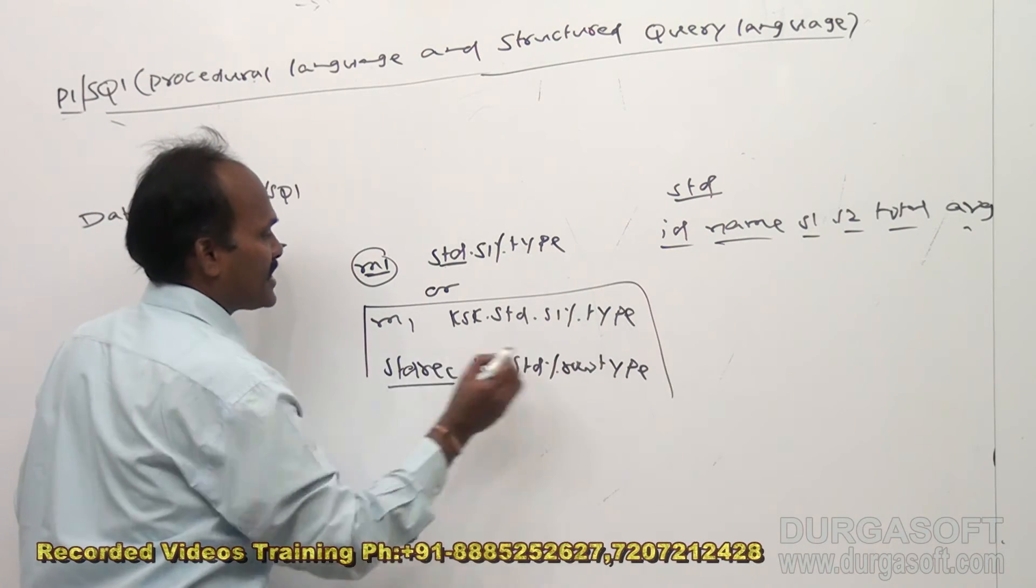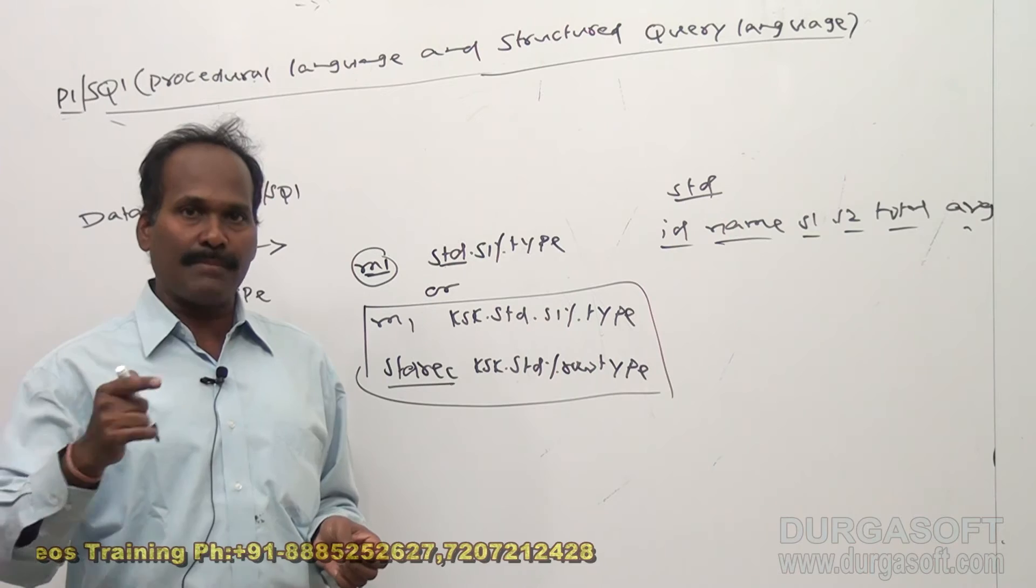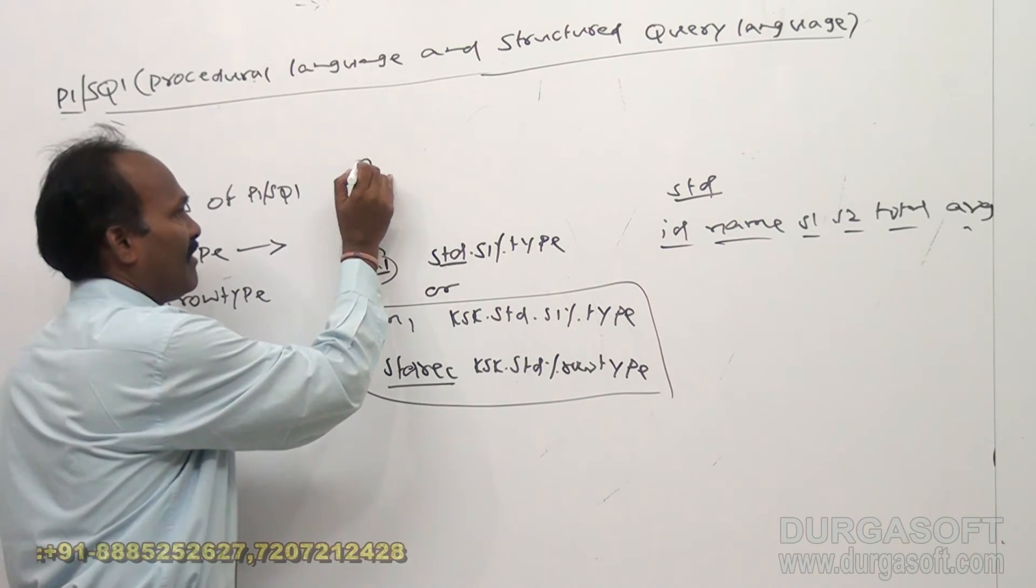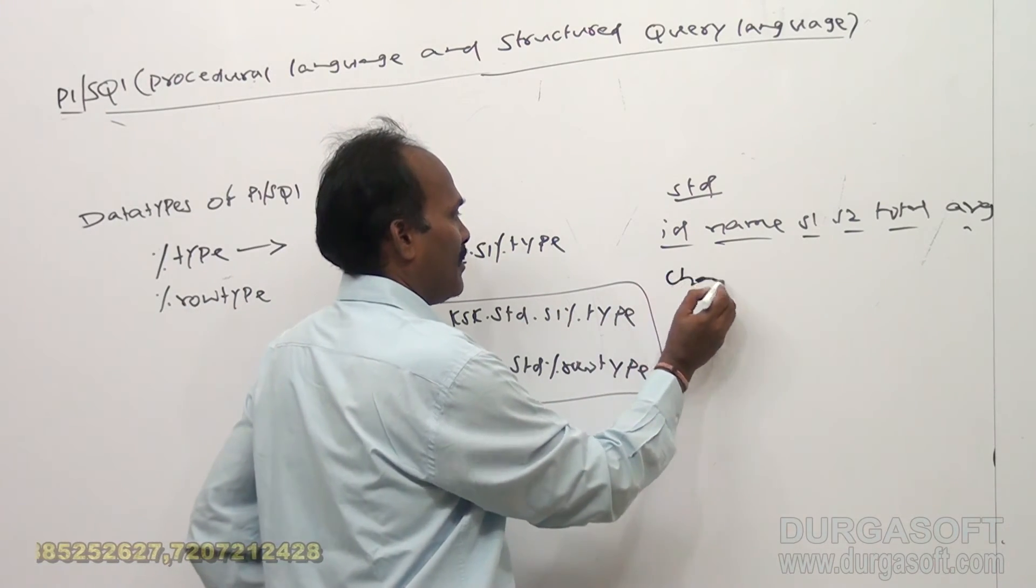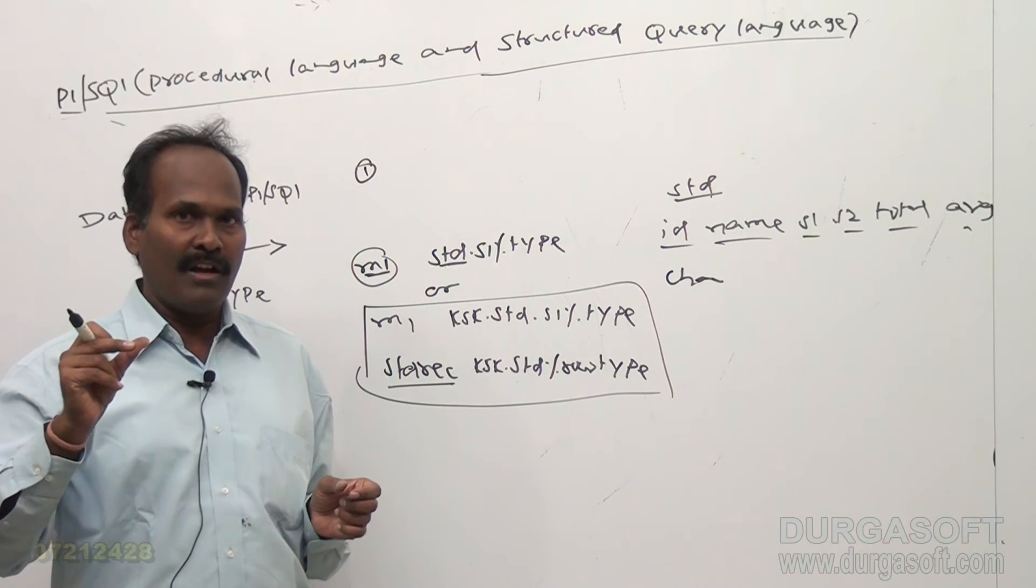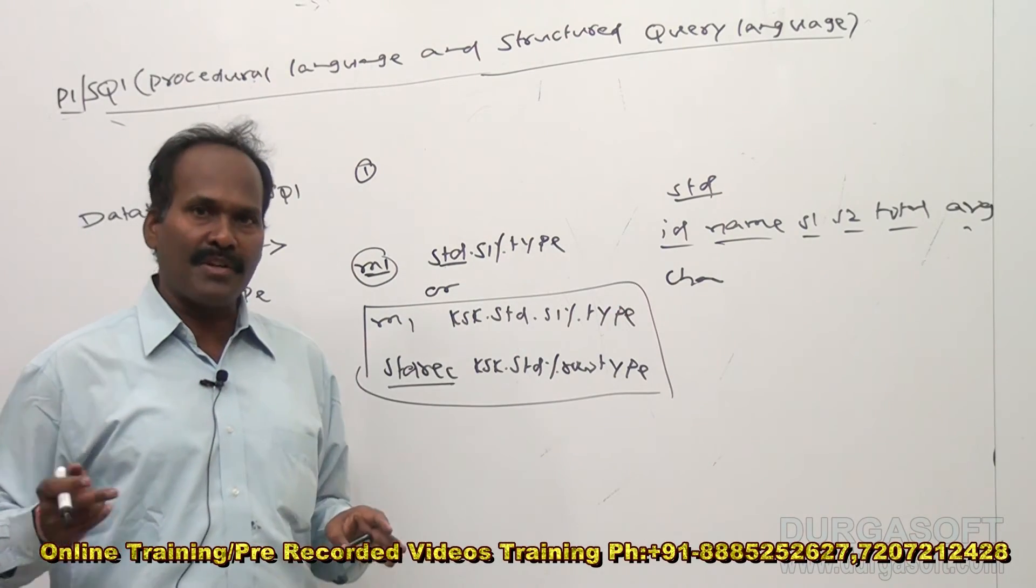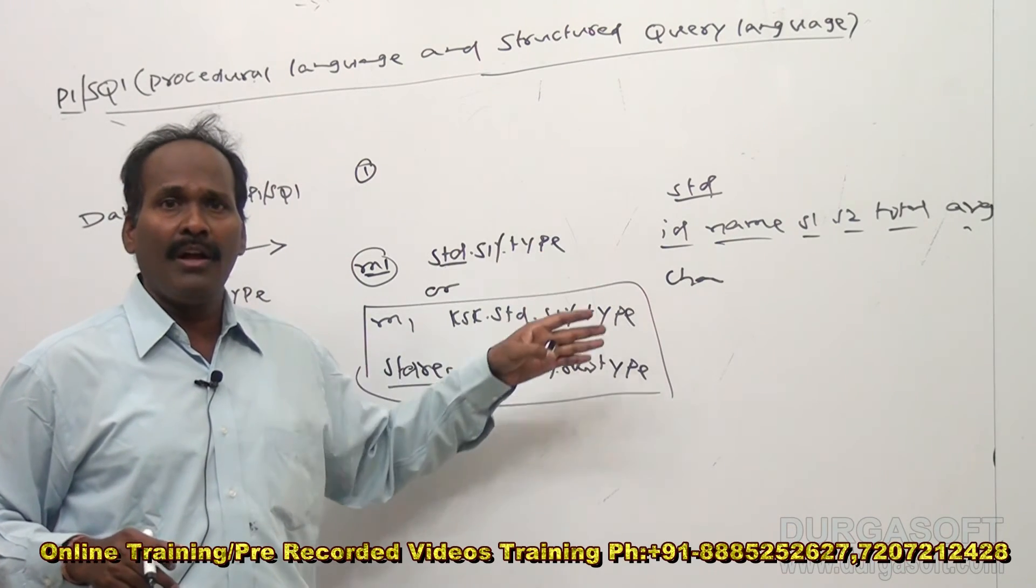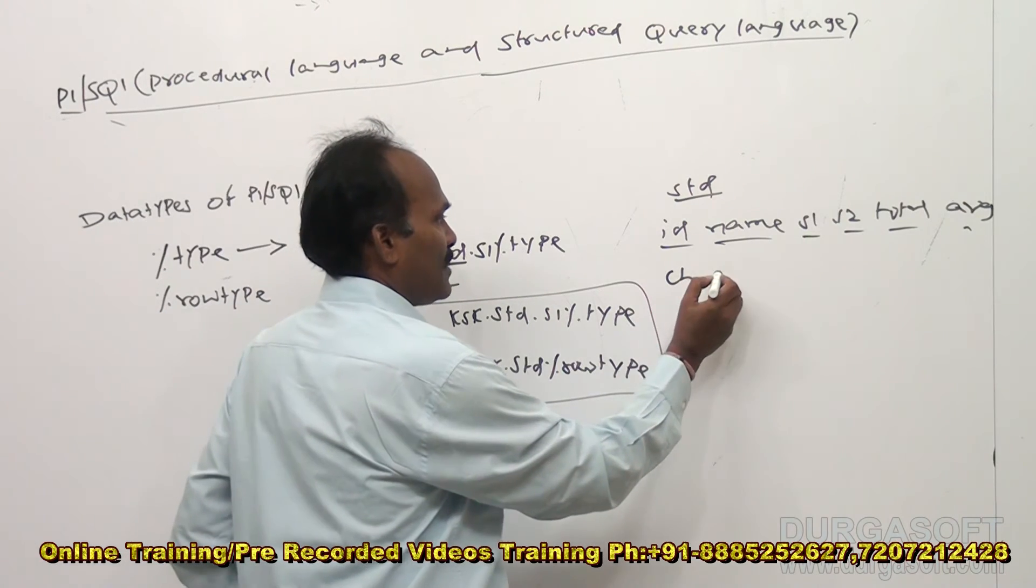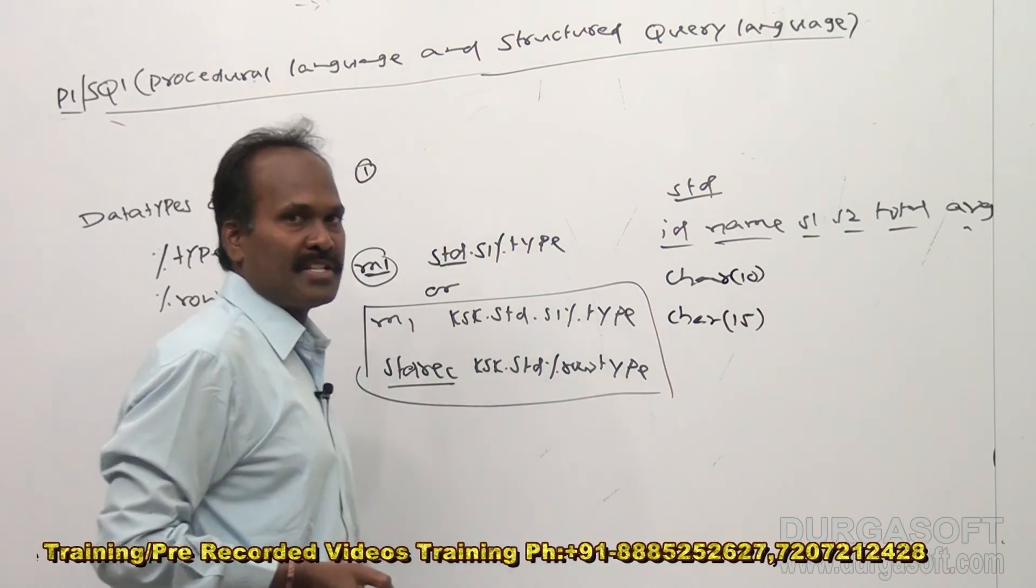So what is the advantage of percentage type and percentage row type? The advantage is: even I do not know the exact data types of the original table columns, I can declare a variable like this. That is the first advantage. Suppose id is character type. For this I want to declare a corresponding variable in my PL/SQL block, I have to declare a variable mid of character type. So in some cases I do not know the data type of id. In such case I can make use of percentage type. That means when you do not know the exact data type of table columns, I can make use of percentage type.